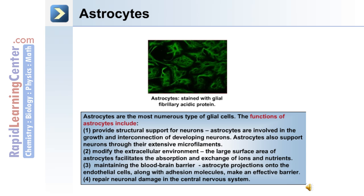Astrocytes are a major glial cell in the central nervous system. They are the most numerous type, and the functions of astrocytes include: number one, providing structural support for neurons. Astrocytes are involved in the growth and interconnection of developing neurons.